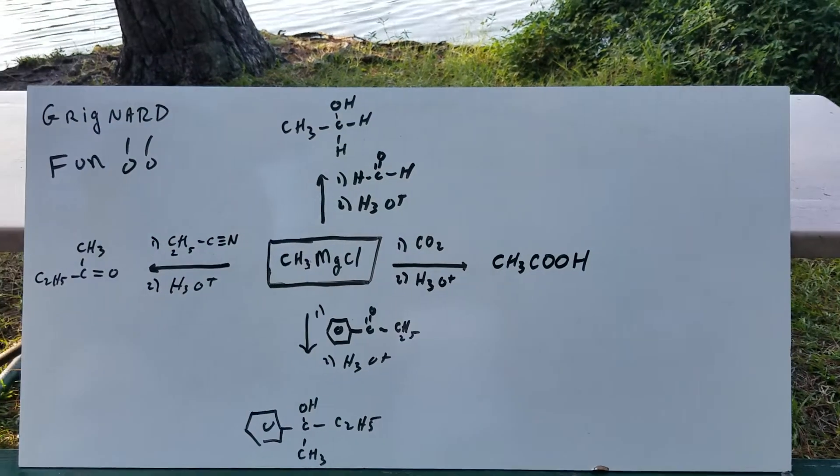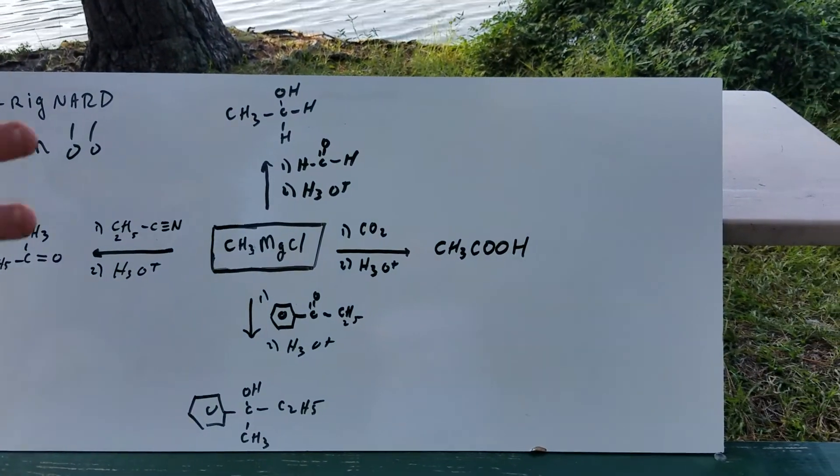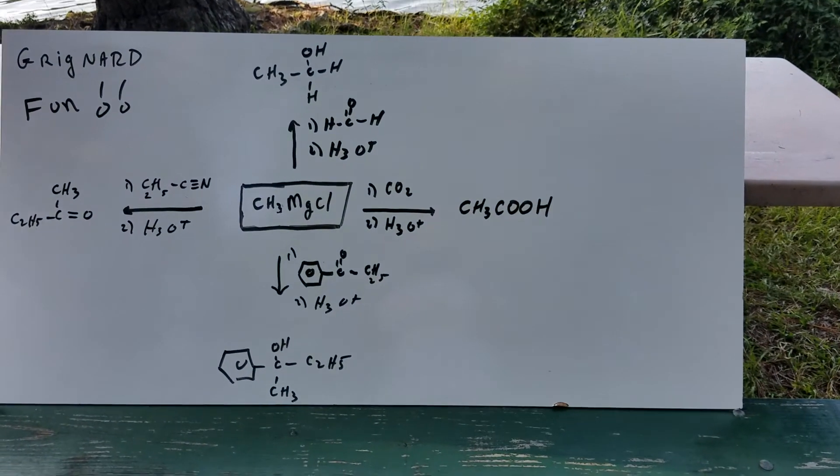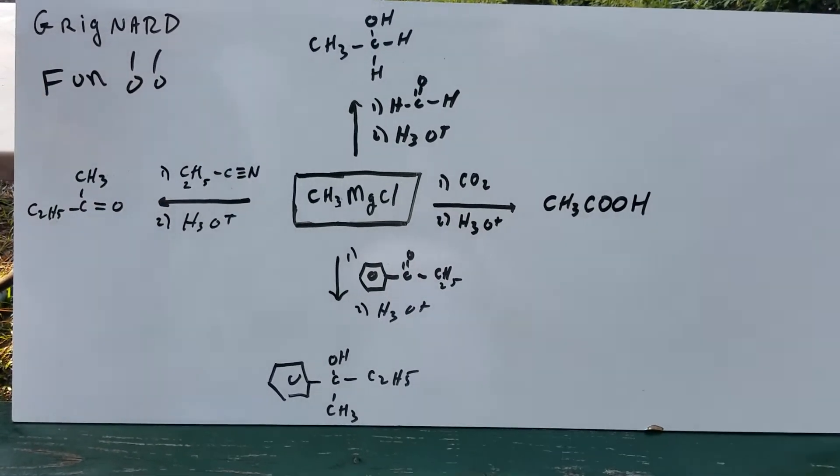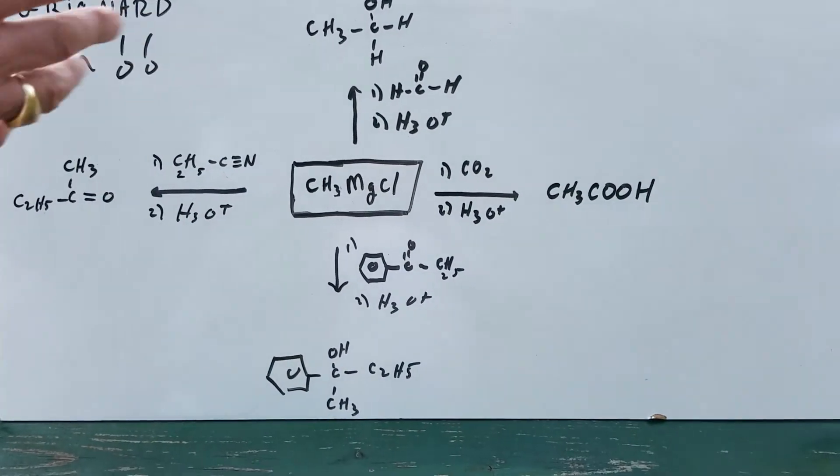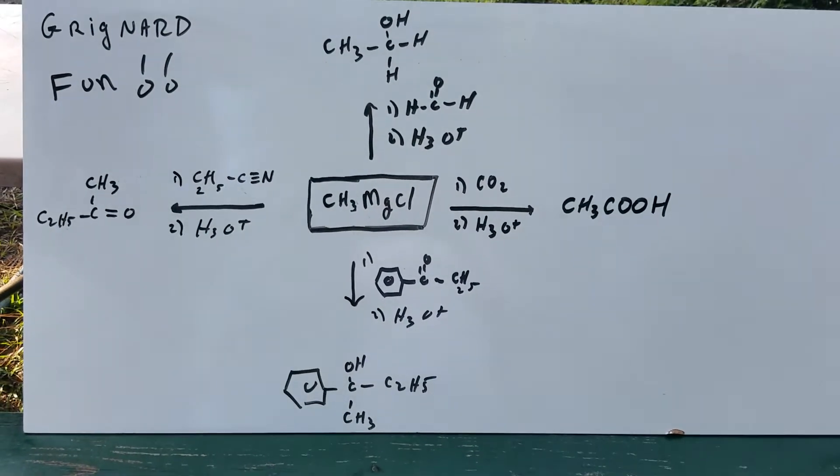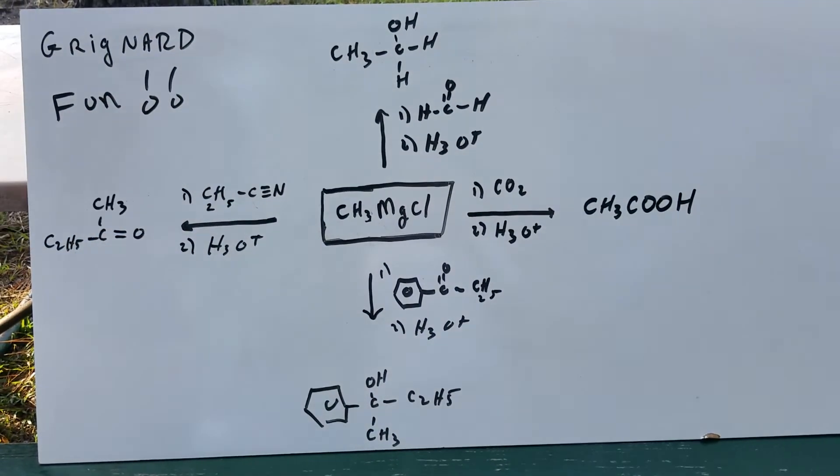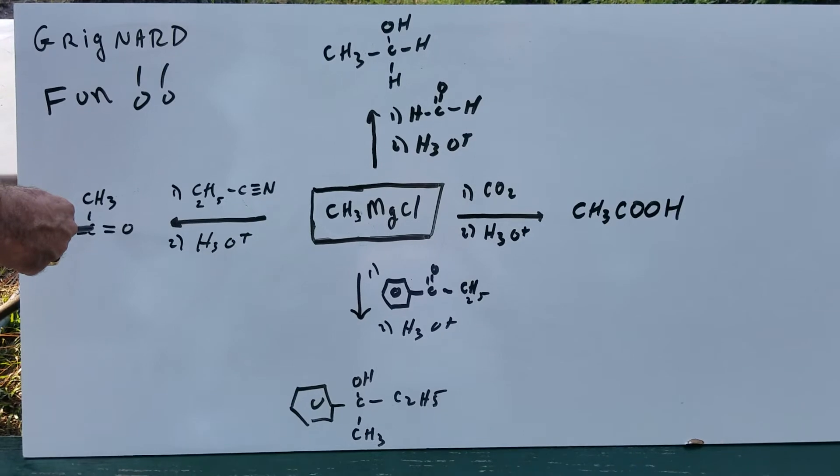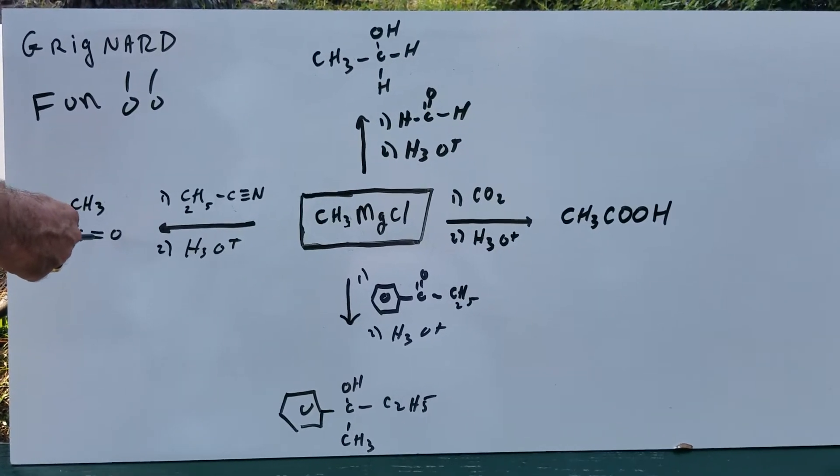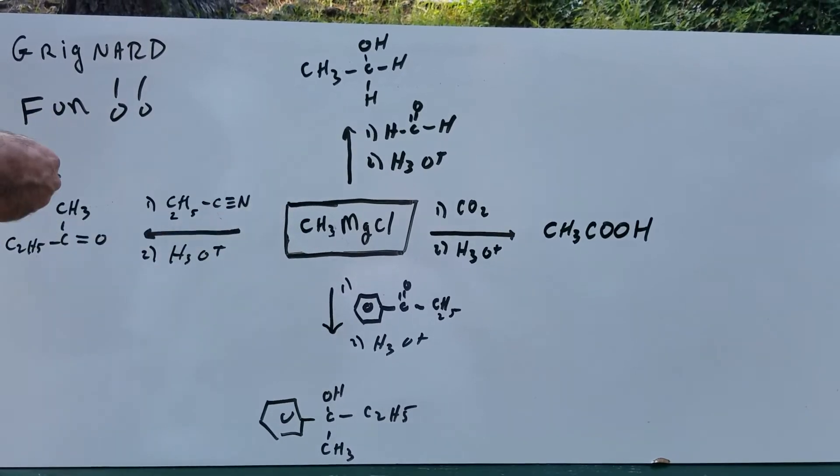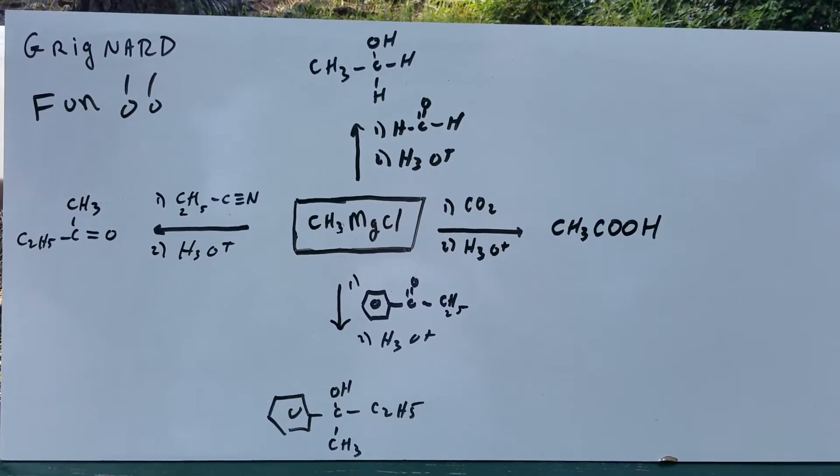And finally, if you have a nitrile, this is the one most students have a lot of trouble with. All you're going to do is you're going to mentally pretend that this triple bond N leaves. In the mechanism of the reaction, it becomes ammonia. We set up a leaving group. All you need to know for that is get rid of the triple bond N, replace the triple bond N with a double bond O, and then that carbon gets the carbon from the Grignard, and it gives you the ketone.